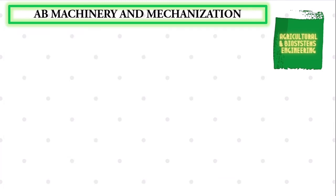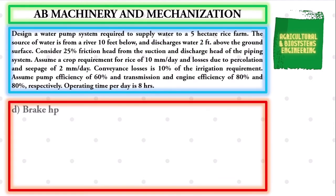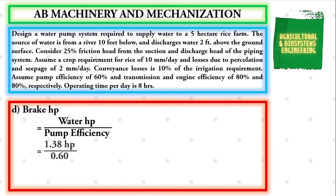The next value to solve is the brake horsepower. The formula is: Brake HP = Water HP ÷ pump efficiency. Substituting: 1.38 ÷ 0.60, giving us a final value for brake HP of 2.3 horsepower.